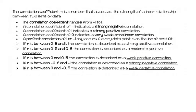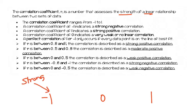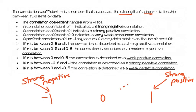The last thing is talking about the strength of correlation, measured by the correlation coefficient, abbreviated R. R assesses the strength of a linear relationship between two sets of data. The correlation coefficient ranges from negative one to positive one, with zero in the middle. Negative one is the strongest possible negative correlation; positive one is the strongest possible positive correlation. A correlation coefficient of one means every single data point was on the line — your data was exactly linear.